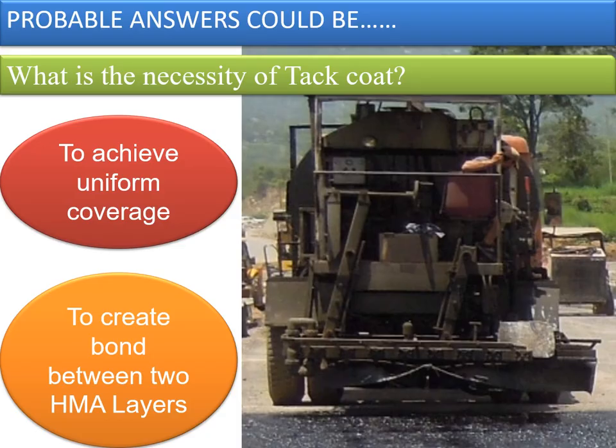The tack coat is applied to create a bond between the two HMA layers and to achieve uniform coverage. When the HMA first layer is laid and there is a gap before applying the second layer of HMA, it is required to apply a tack coat.